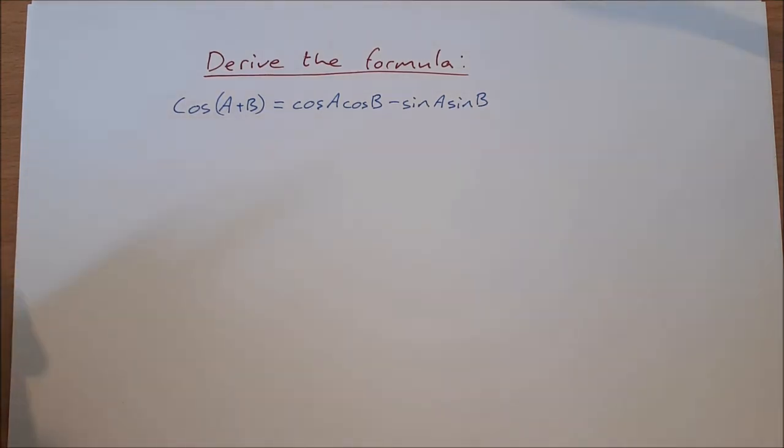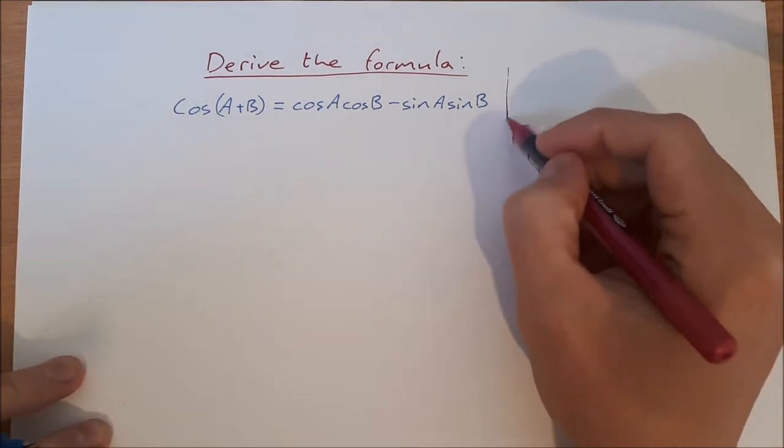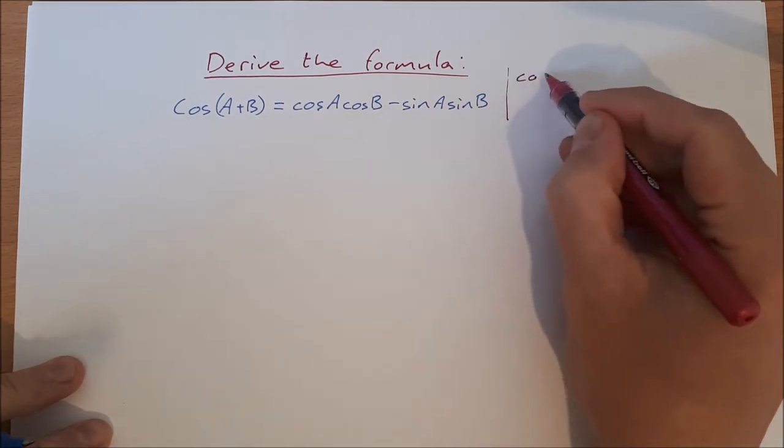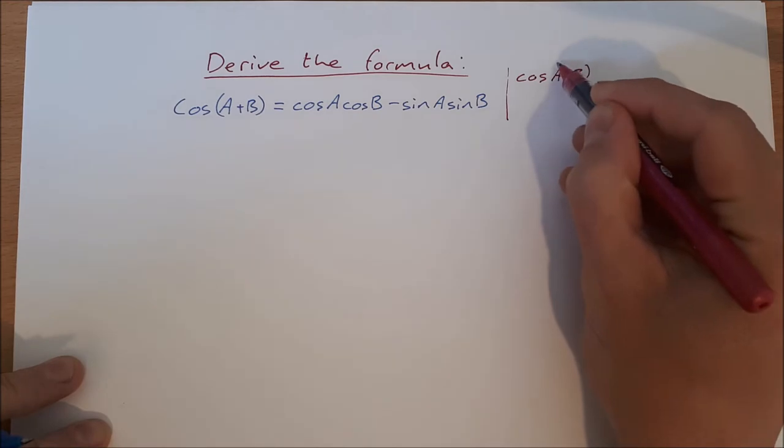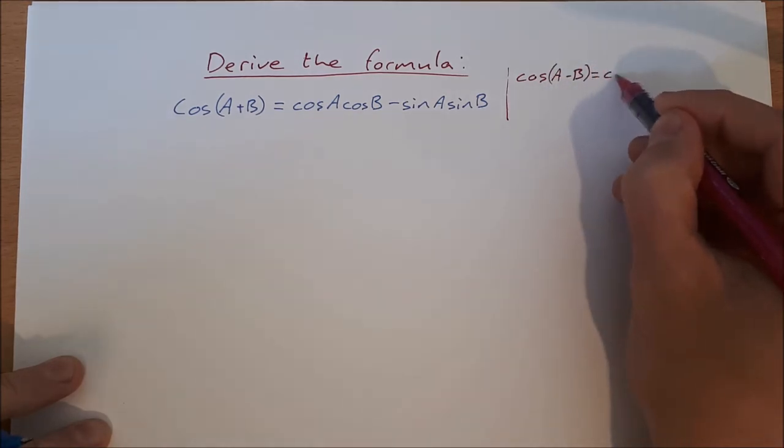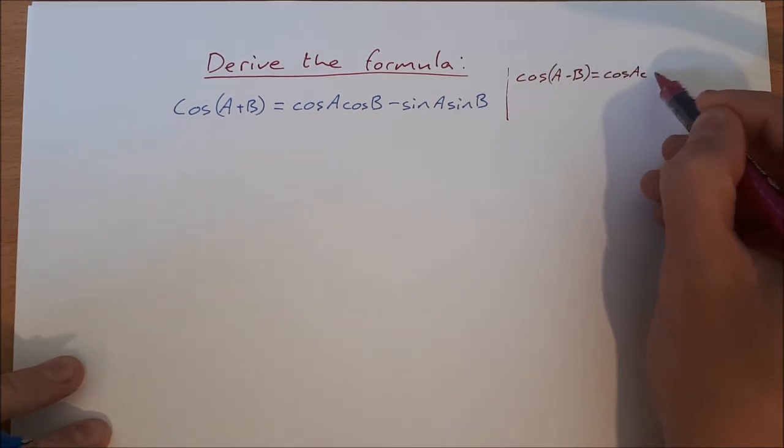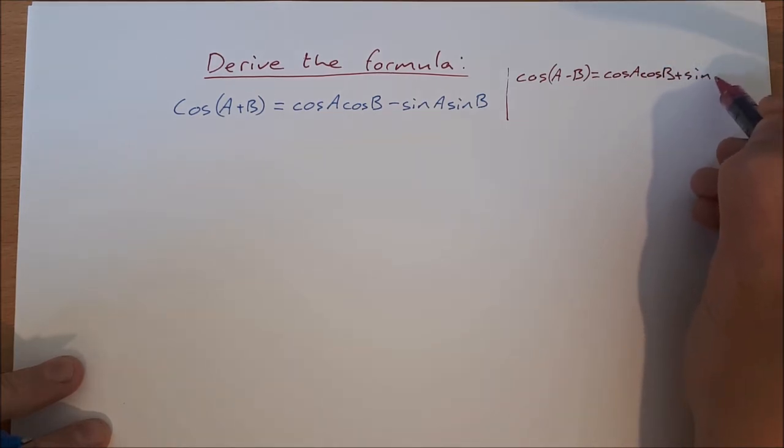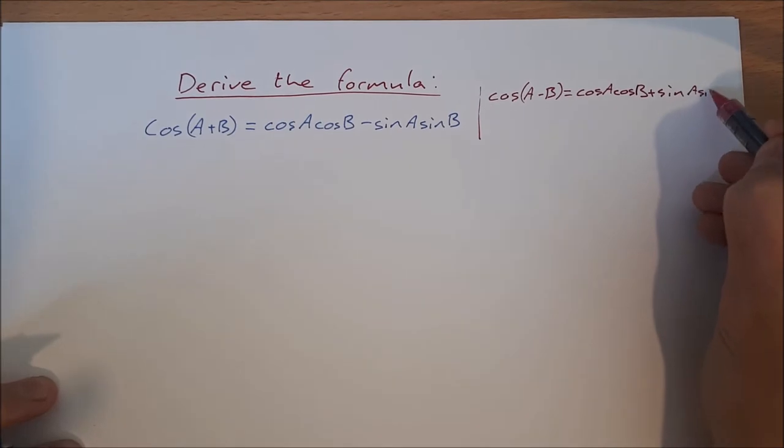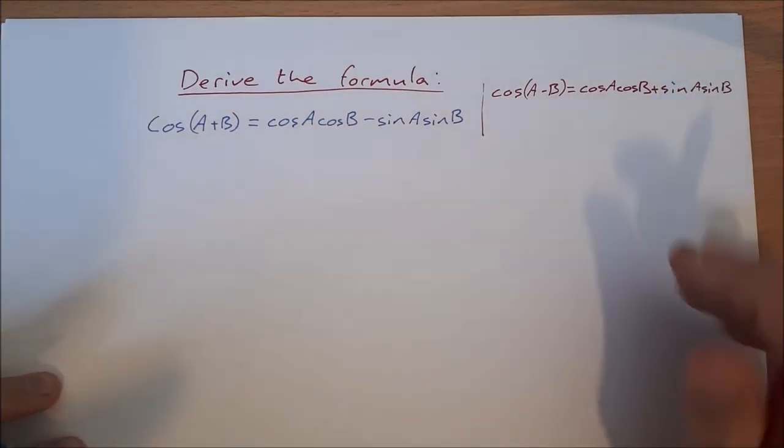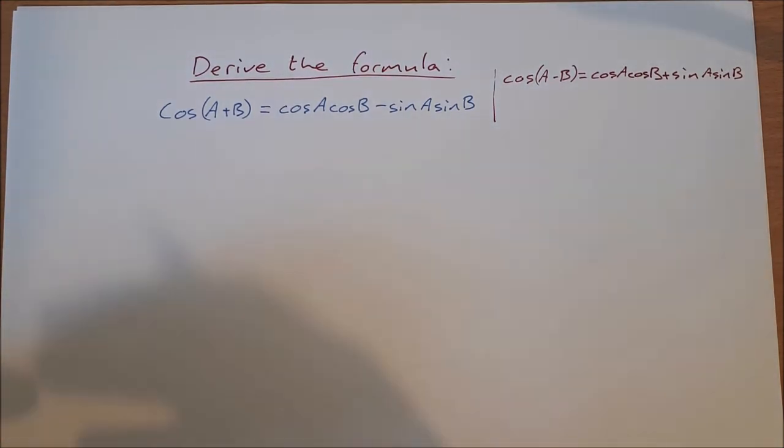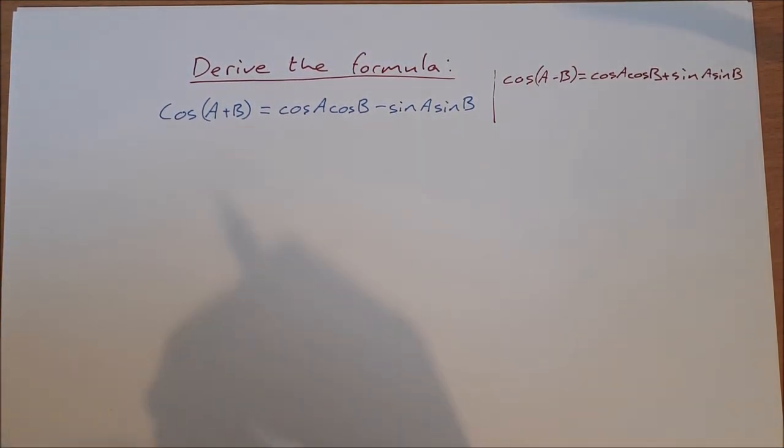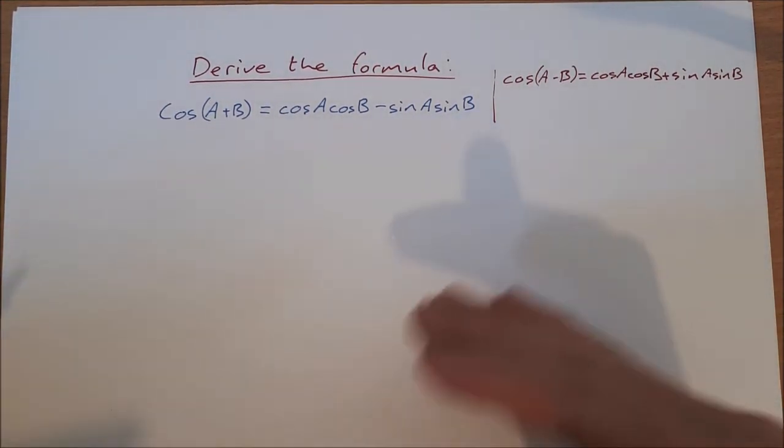Now, this one is very similar to cos of A minus B, which we did in the last video, equal to cos A cos B plus sin A sin B. So it's very similar to that one. There's actually only a small change at the end of the proof.